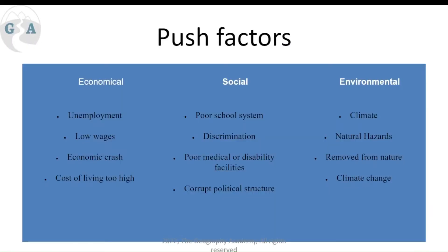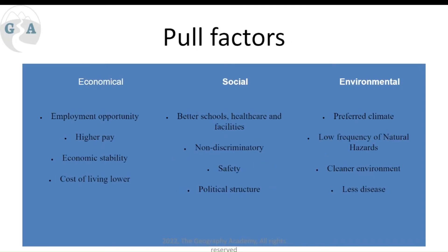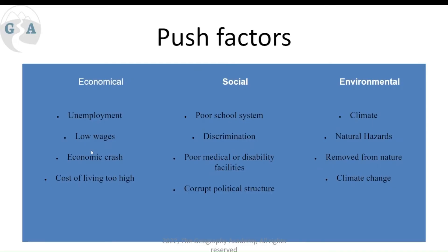We often talk about two things that will consistently come up: push factors and pull factors. Push factors are reasons for people to leave the origin — what's going on in that place. For economic examples: unemployment, low wages, economic crash, cost of living too high. All of these are negatives about the origin. A push factor from an origin would be low wages, so then a pull factor for a destination could be higher wages.